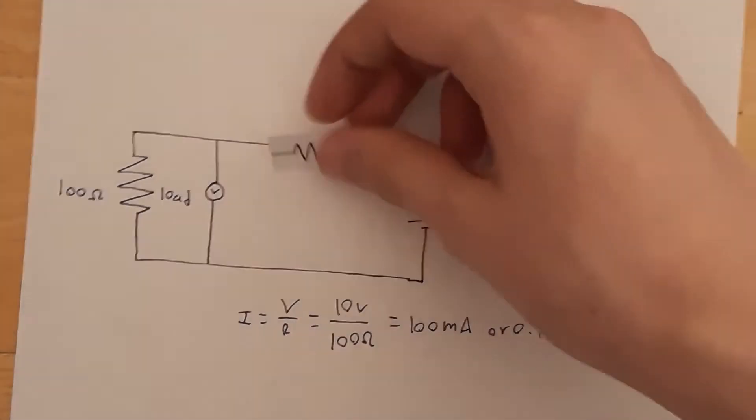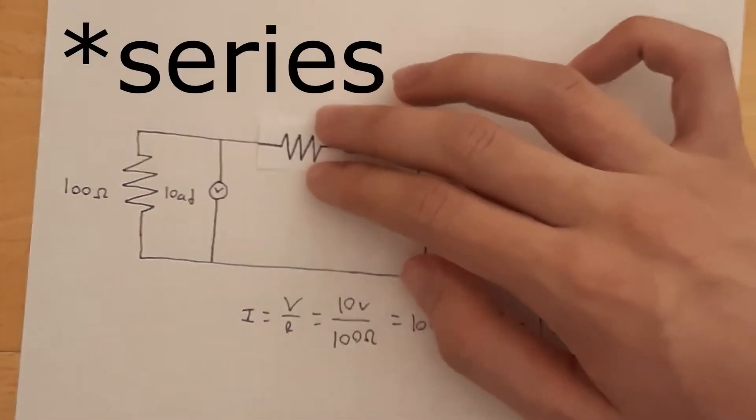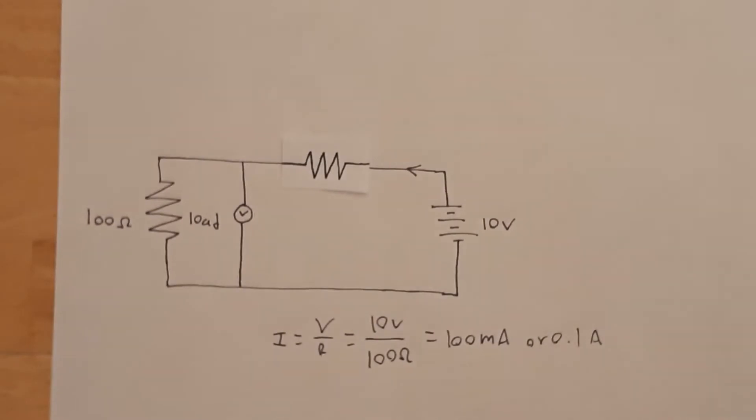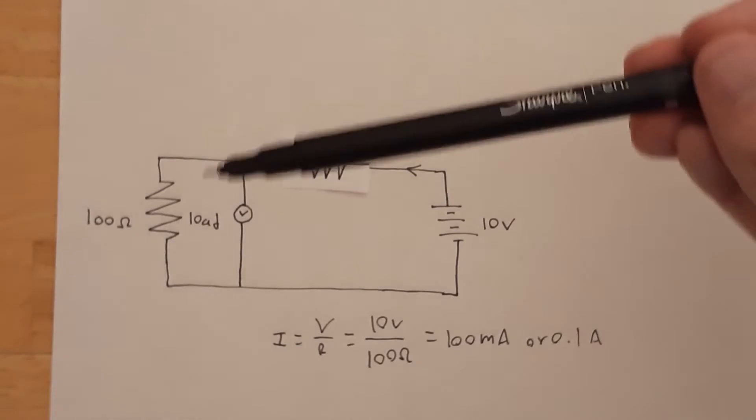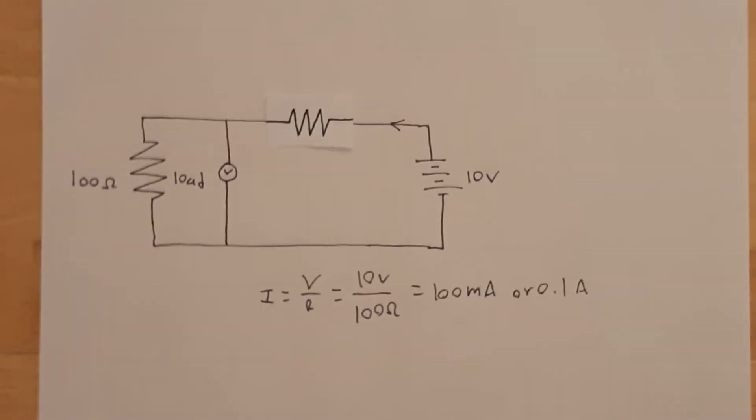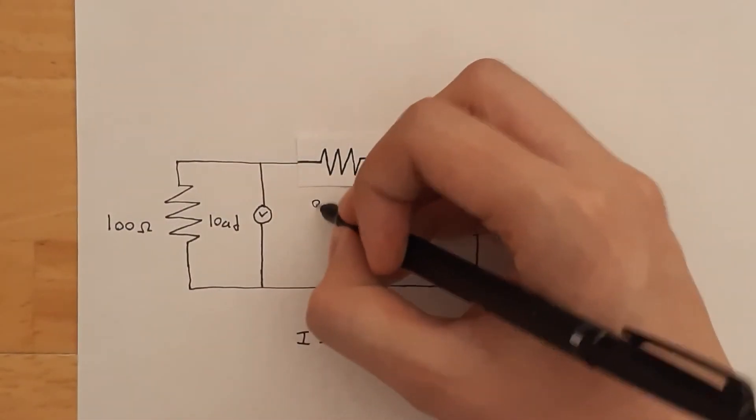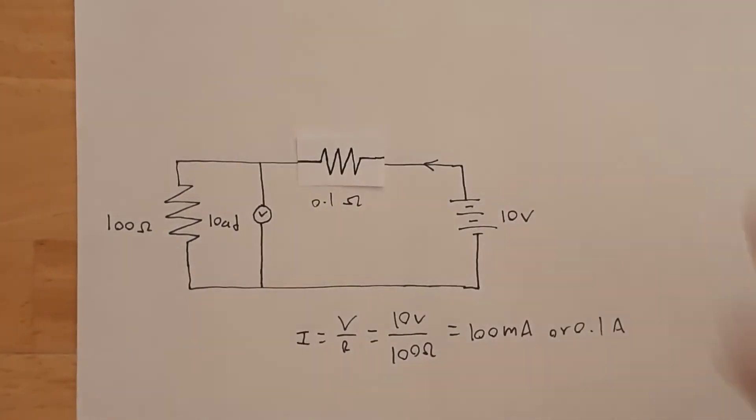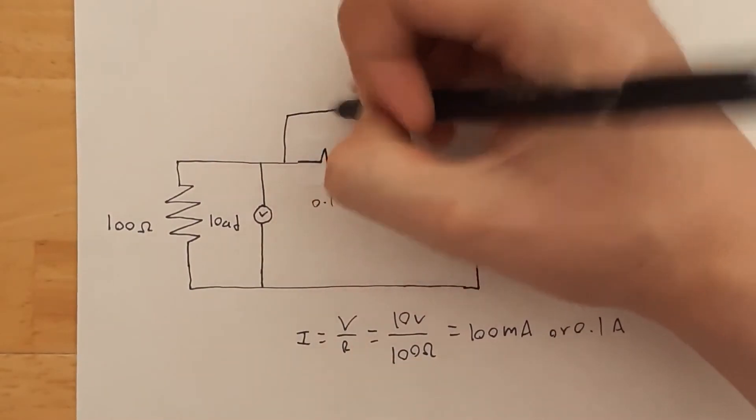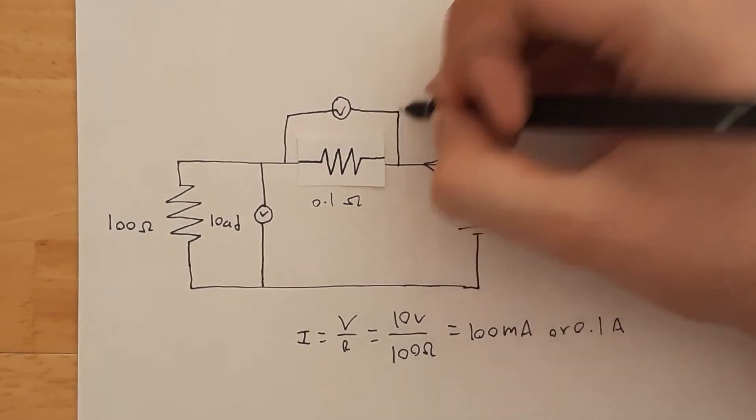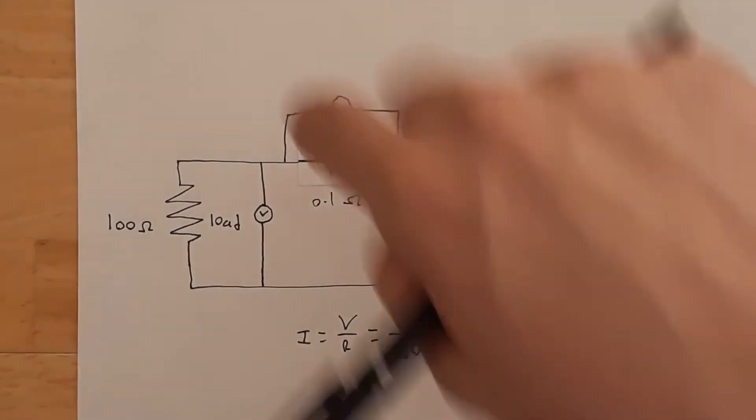What a current shunt does is it adds another resistor in parallel with the load. This resistor will have a super small resistance like 0.1 or 0.01 ohms. This means the current going through the load is still pretty much the same. This resistor is so small it doesn't affect current that much. When it has 0.1 ohms, we take another voltmeter and put that in series with the current shunt resistor, and then we can measure the voltage across this current.